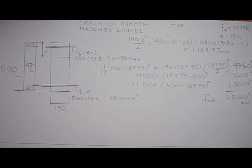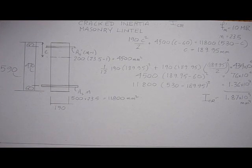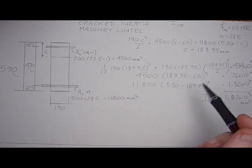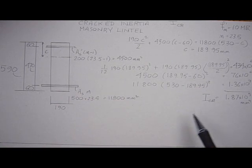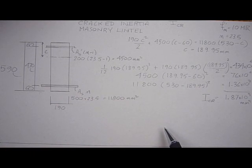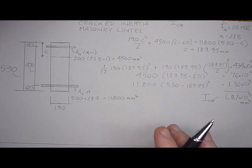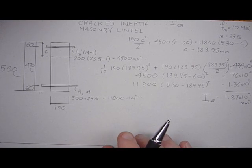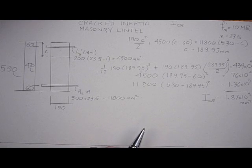So that's really all you have to do to solve for the I cracked. And then now in the next tutorial we're going to take the gross inertia and the cracked inertia and use an averaging technique to come up with an effective inertia.